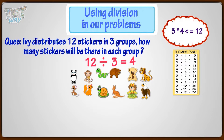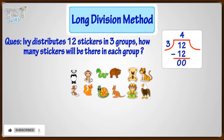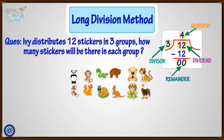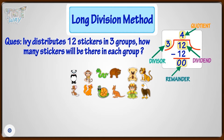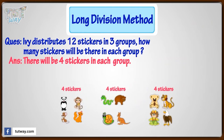You can also use the long division method. Here, our dividend is 12, divisor is 3, quotient is 4, and the remainder is 0. What we need here is the quotient, which is 4. So, there will be 4 stickers in each group.